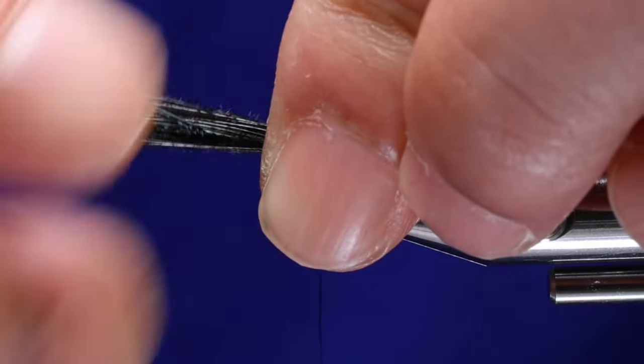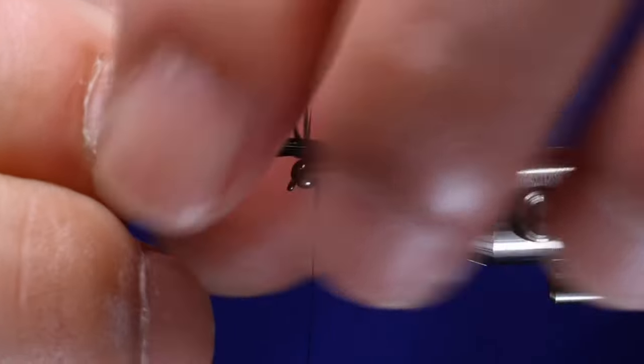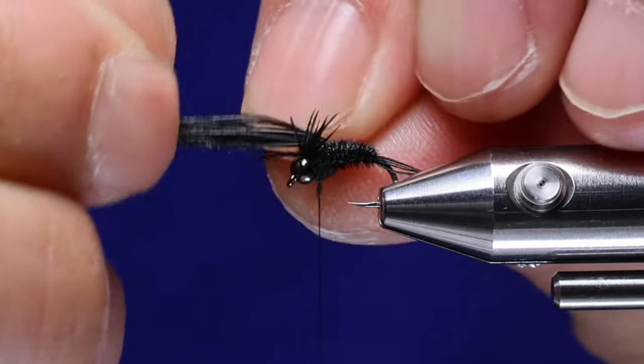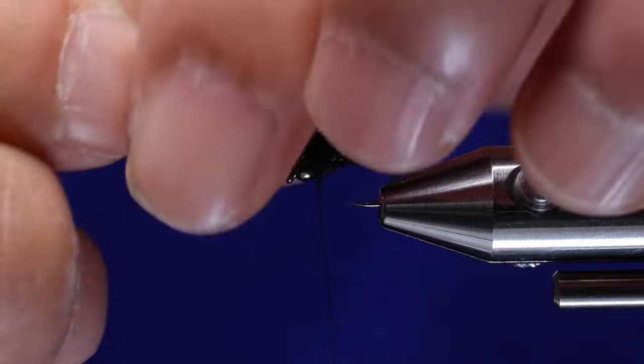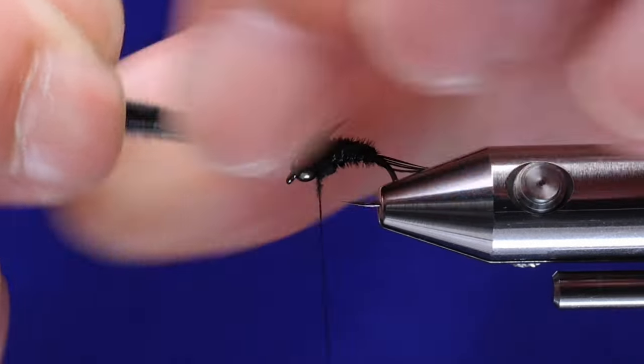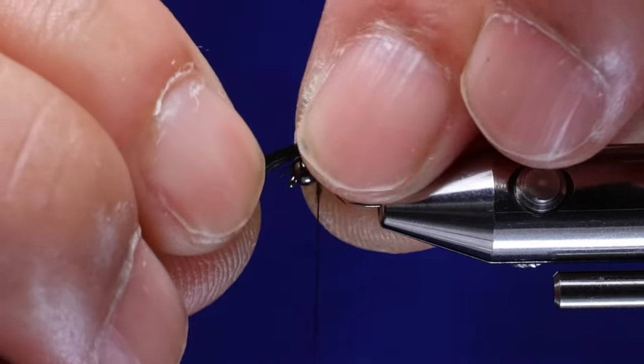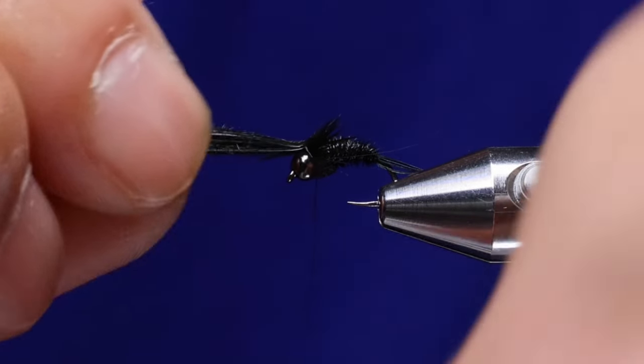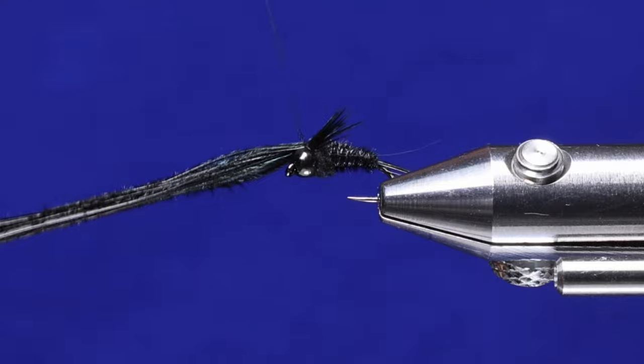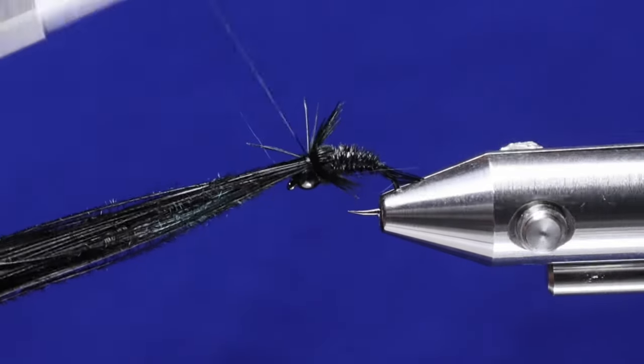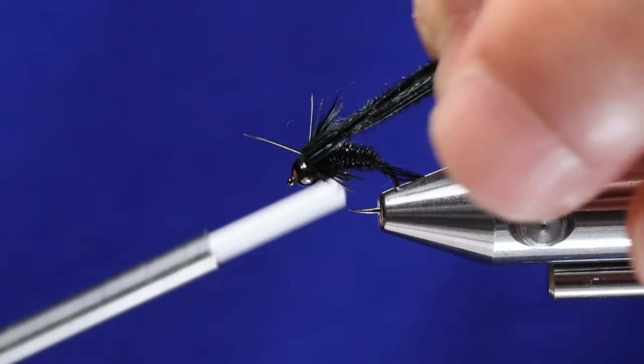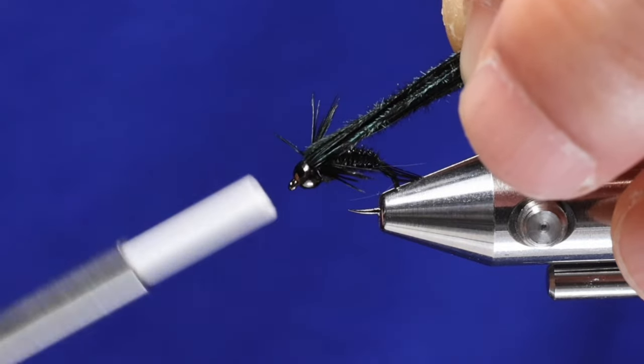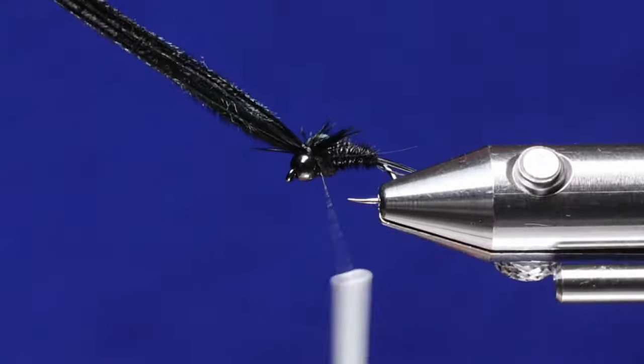You're going to have a couple that aren't going to want to play. Don't worry too much about it because you could use your thread then to capture them. And then I'm going to tie down the fibers to form that wing case. We've got one right there that just didn't want to cooperate. We're going to snip that right off though.